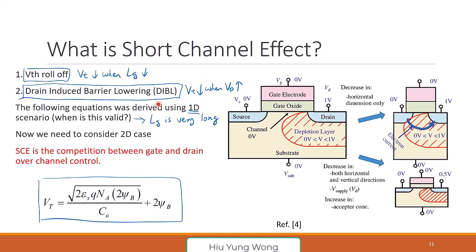Please memorize this: threshold voltage roll-off, or the threshold voltage reduction, is the so-called short channel effect — the most important short channel effect, because there are many others but we only care about these here. There are two of them: just reducing the gate length reduces VTH, and just increasing VD also reduces VTH.